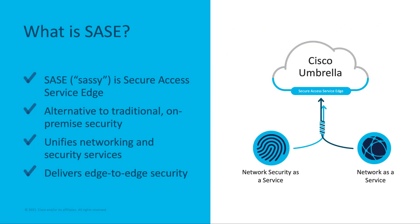SASE stands for Secure Access Service Edge, and it's essentially a blend of cloud-delivered networking and cloud-delivered security. The idea behind SASE is that we can apply the same level of security on traffic that we would have historically, regardless of where that traffic is coming from, by using the cloud. In other words, SASE looks to use the pervasiveness of the cloud to apply security to your traffic no matter where you are on the globe.